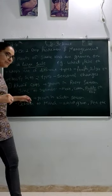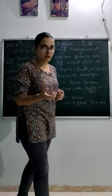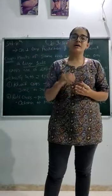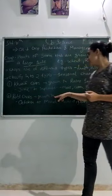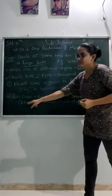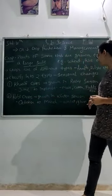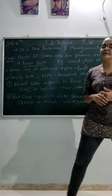Coming to Rabi crop, Rabi crop means the crop or the plant which requires moderate temperature plus humidity and then grown in winter season. Duration is October to March, and wheat, gram, and peas are the examples.